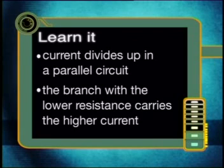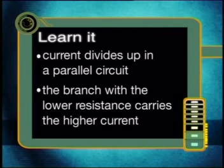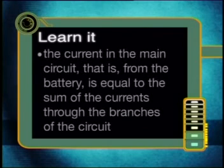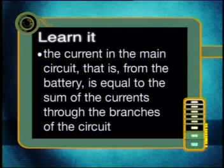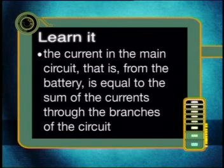Now, what can we learn from these results? Current divides up in a parallel circuit. The branch with a lower resistance carries the higher current. And the current in the main circuit, that is from the battery, is equal to the sum of the currents through the branches of the circuit.